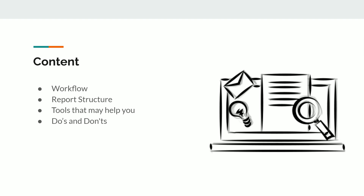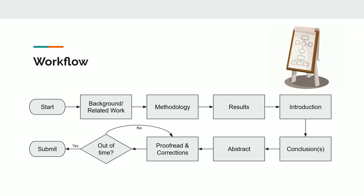This flowchart shows you the workflow where you will start with your background research and literature review, related work and those kind of things, where you will be reading a lot of papers and researching the market to see if something existing is already there. After that you will actually work on the methodology, where you will explain what you are doing, what tools you are using, and things like that. Once you've done the whole process you will be ready with your results.